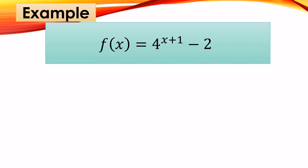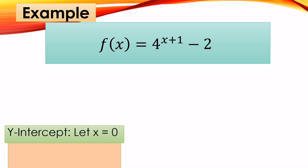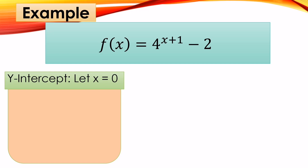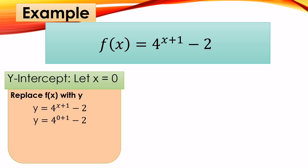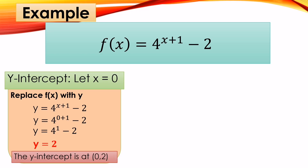Another example: f(x) = 4 raised to (x + 1) minus 2. To find the y-intercept, let x = 0. Replace f(x) with y, substitute x = 0: y = 4 raised to (0 + 1) minus 2 = 4 raised to 1 minus 2 = 4 minus 2 = 2. Therefore, the y-intercept is at (0, 2).